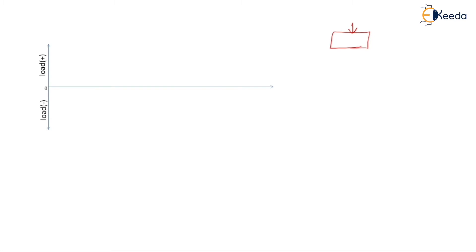In this graph, the horizontal axis represents progress of time and the vertical axis represents the load. The upper side indicates increase of load, because of which compression of soil takes place. The bottom side represents decrement of load, because of which swelling of soil takes place.